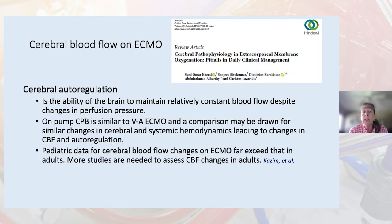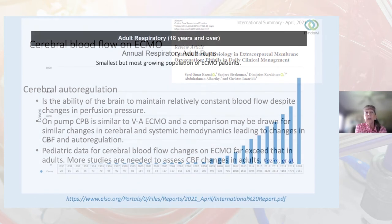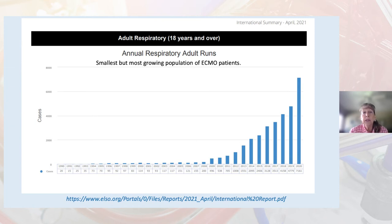Cerebral autoregulation is the ability of the brain to maintain relatively constant blood flow despite changes in perfusion pressure. On cardiopulmonary bypass, it is very similar to VA ECMO, and a comparison may be drawn for similar changes in cerebral and systemic hemodynamics leading to changes in cerebral blood flow and autoregulation. There is a lot more data in the pediatric literature for cerebral blood flow changes on ECMO than for adults, so more studies are needed to assess cerebral blood flow changes in adults.